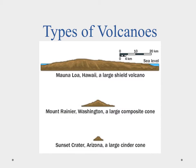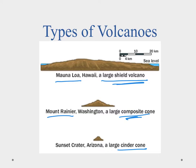Looking at examples of the three types: the large shield volcano is represented by Mauna Loa in Hawaii — one of the largest volcanoes on the planet, essentially an island. Composite volcanoes are represented by Mount Rainier. All three are drawn to scale, illustrating how much bigger a shield volcano is than a composite. Sunset Crater in Arizona represents the cinder cone, showing the dramatic size variation between the three types.